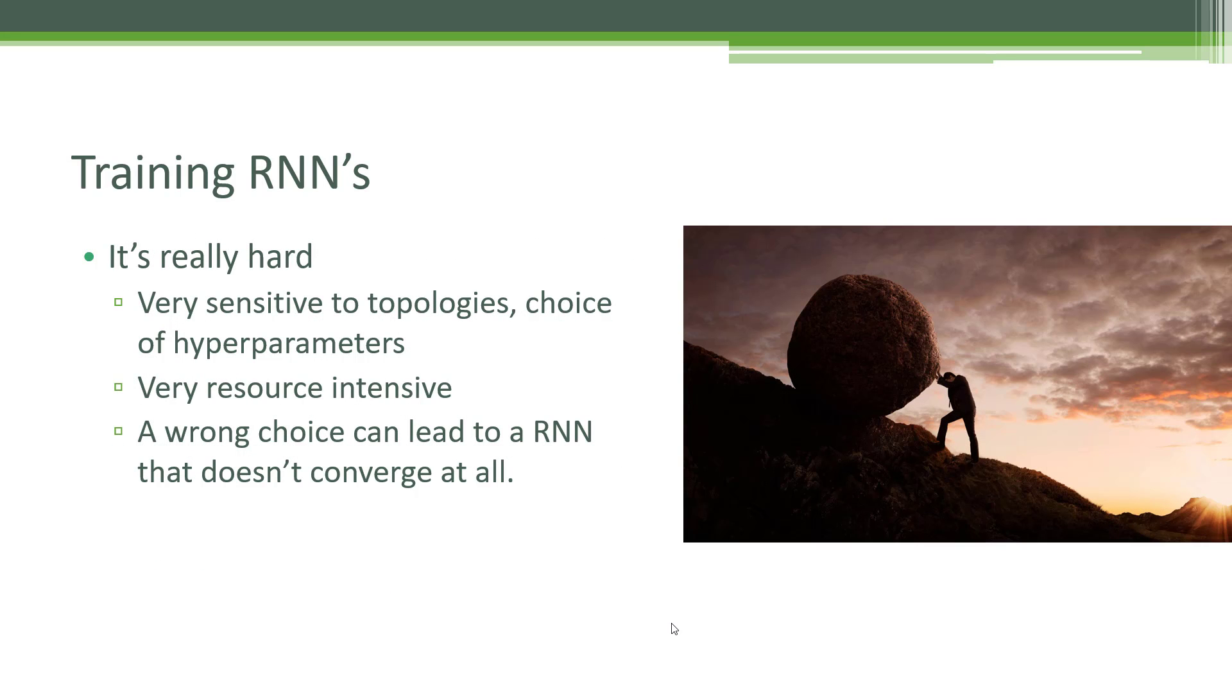Training them is really hard. If you thought CNNs was hard, wait till you see RNNs. They are very sensitive to the topologies that you choose and the choice of hyperparameters, and since we have to simulate things over time and not just through the static topology of your network, they can become extremely resource intensive. And if you make the wrong choices here, you might have a recurrent neural network that doesn't converge at all.